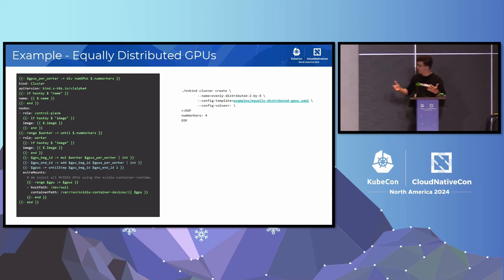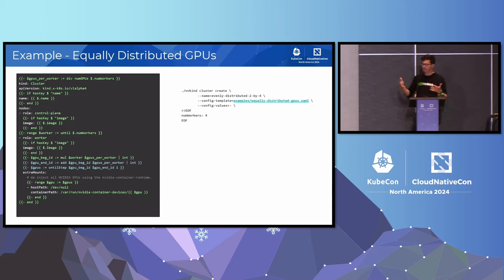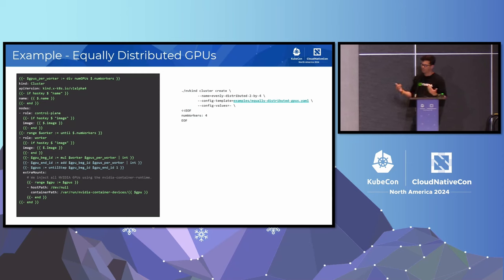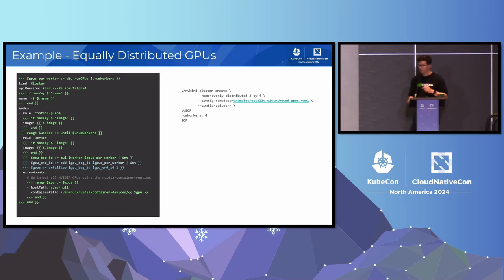A slightly more complex example: here we want to equally distribute the GPUs available on the system over a number of workers requested by the user. We calculate the number of GPUs per worker. You also have other templating values — you can change the name of the cluster and the image for the various nodes using this templating. For each of the workers, we calculate the number of GPUs, iterate over a slice of the indices of each of these GPUs, and then inject these mounts into each of the nodes. You'd launch it like the command on the right, where you specify the number of workers in an additional config. You should then have a Kind cluster with multiple nodes running on a single machine where a subset of the GPUs has been injected into each of the nodes.